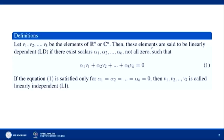These elements or vectors are said to be linearly dependent (LD) if there exist scalars α₁, α₂, ..., αₖ — not all zero — such that α₁v₁ + α₂v₂ + ... + αₖvₖ = 0. And if this equation is satisfied only when α₁ = α₂ = ... = αₖ = 0, then these vectors are called linearly independent.